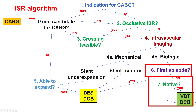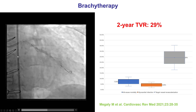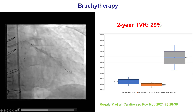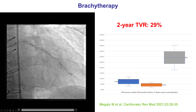If, however, this is not the first episode and there are already two or more layers of stents, then treatment depends on whether this occurs in a native coronary or a saphenous vein graft. If this is in a native coronary artery, treatment is often with brachytherapy or drug-coated balloons. DCBs are not currently approved by the FDA in the U.S. for coronary use, whereas brachytherapy is. Brachytherapy is not perfect — the two-year TVR in a meta-analysis was 29% — however, it is the best treatment currently available and FDA approved.